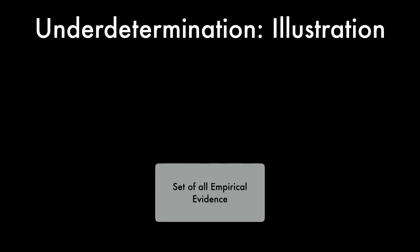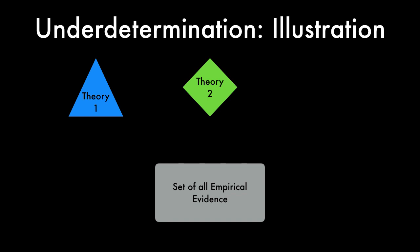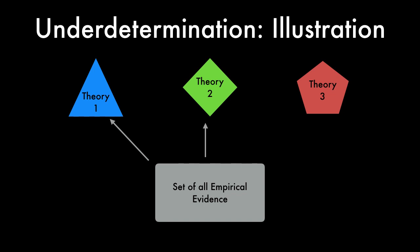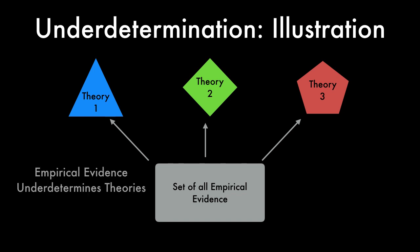Imagine that we have a set of all of the empirical evidence. Given this set, there will be different theories — call them theory 1, theory 2, and theory 3 — and these theories say different things about the world. However, given this set of empirical evidence, it might be the case that theory 1 is true, theory 2 is true, or theory 3 is true. Theory 1, theory 2, and theory 3 are all consistent with that empirical evidence, even though they say different things about the world.